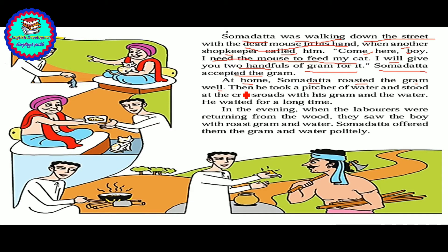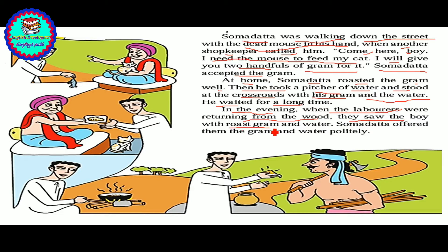At home, Somdatta roasted the grain well. Then he took a pitcher of water and stood at the crossroads with his grain and water. In the evening, when the labourers were returning from the woods, they saw the boy with roasted grams and water.